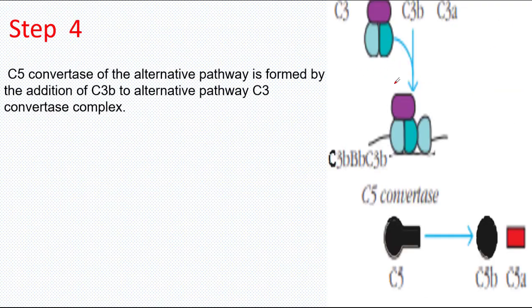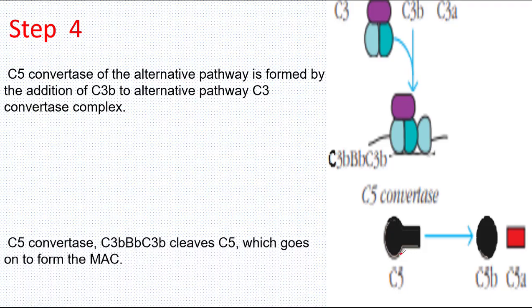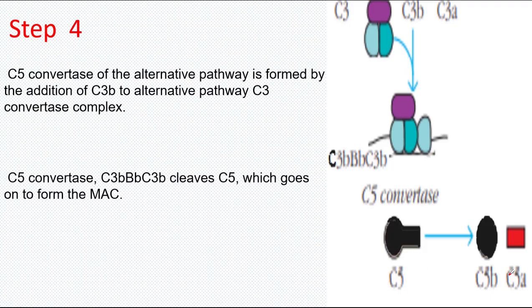In some cases, C3B fragment, which was formed in the previous step, combines with the C3 Convertase to form C5 Convertase. C5 Convertase cleaves the C5 component into C5 Beta and C5 Alpha fragments.